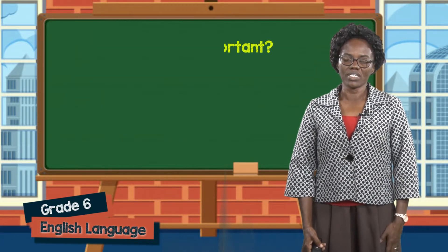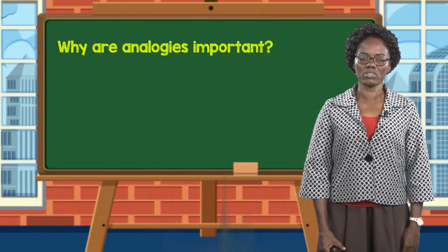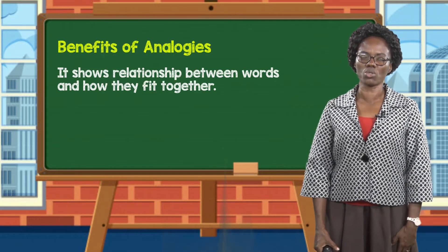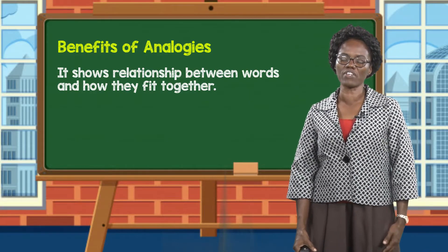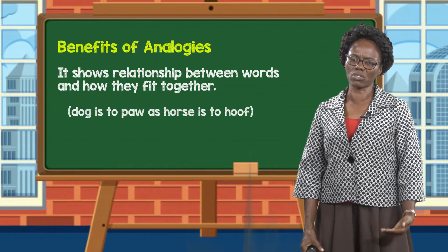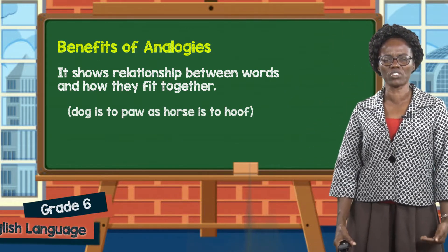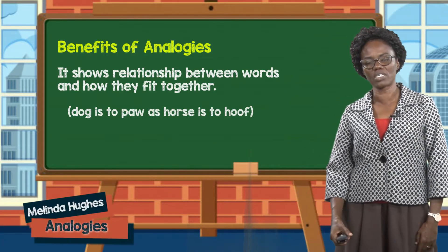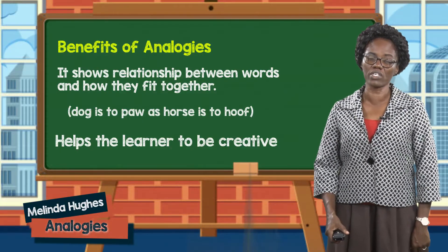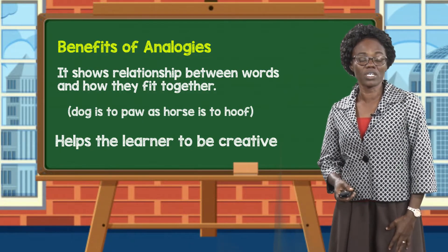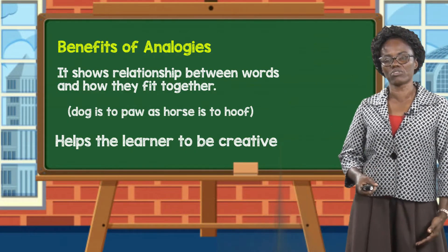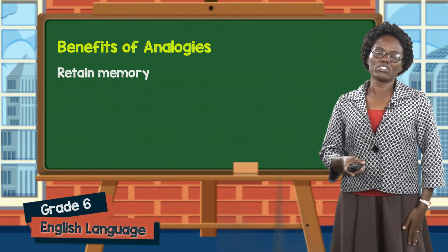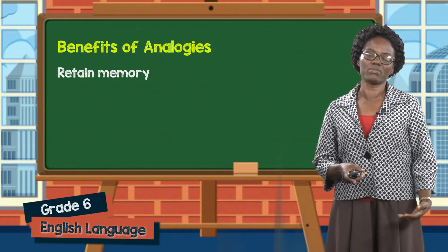So boys and girls of grade 6, you may be wondering why analogies are important at this grade. Here are a few benefits. One, analogies show the relationship between words and how they fit together, like we did in the previous examples — dog is to paw as horse is to hoof. It also helps learners to be creative. Analogy helps learners to look at particular areas in vocabulary, such as collective nouns, group names, and diminutives.